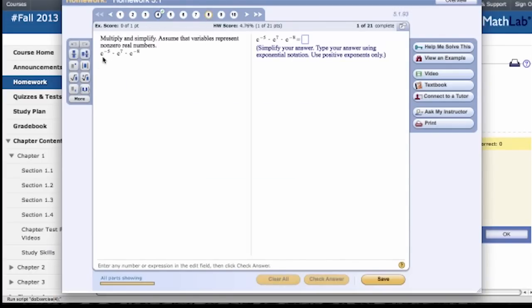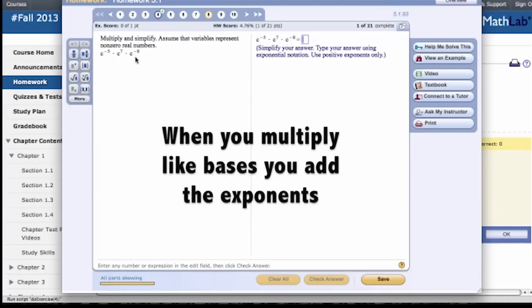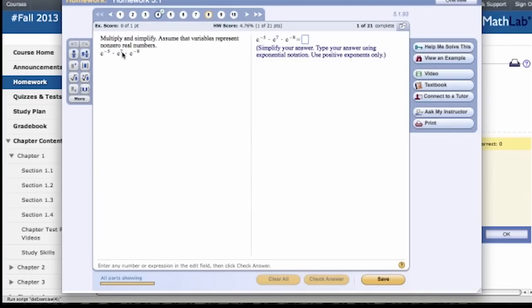Here, it says c to the negative 5th, c to the 7th, and c to the negative 8. So, we know the rule. It says when you multiply like bases, you add the exponents. So, we have negative 5 plus 7, which is 2, and 2 minus 8 is negative 6. So, we get c to the negative 6th power. And we check our answer, and it says, ah, darn. I remember. Simplify your answer. So, you have to read this carefully, because if you don't put it in the right form, you will not get the right answer.